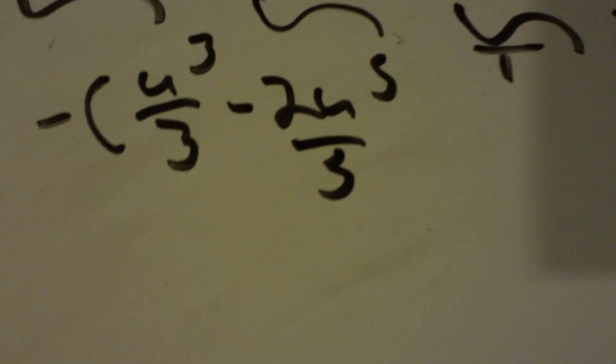You had a negative parentheses, u cubed over 3, minus 2u to the 5th over 5, plus u to the 7th over 7.